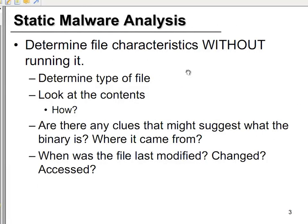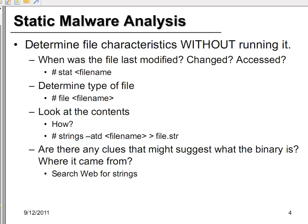Recall from our first lesson that static malware analysis tries to determine file characteristics without running it. We want to look at the file type, look at the contents of the file even though it's a binary, and look at other information such as the modified, changed, and access times, as well as the hash of the file. We use the stat command, which tells us all the metadata about the file.